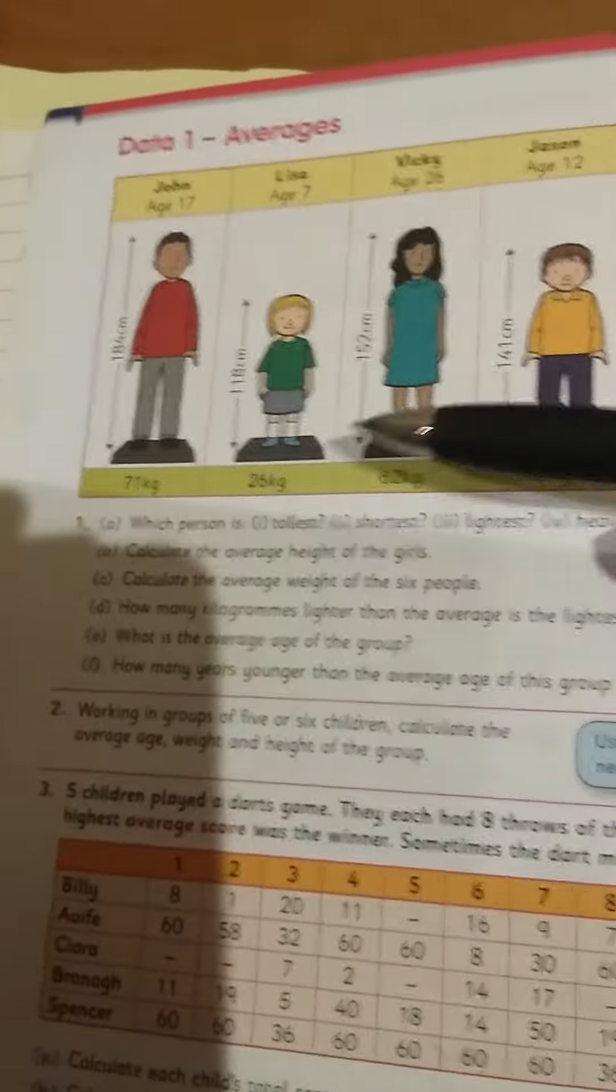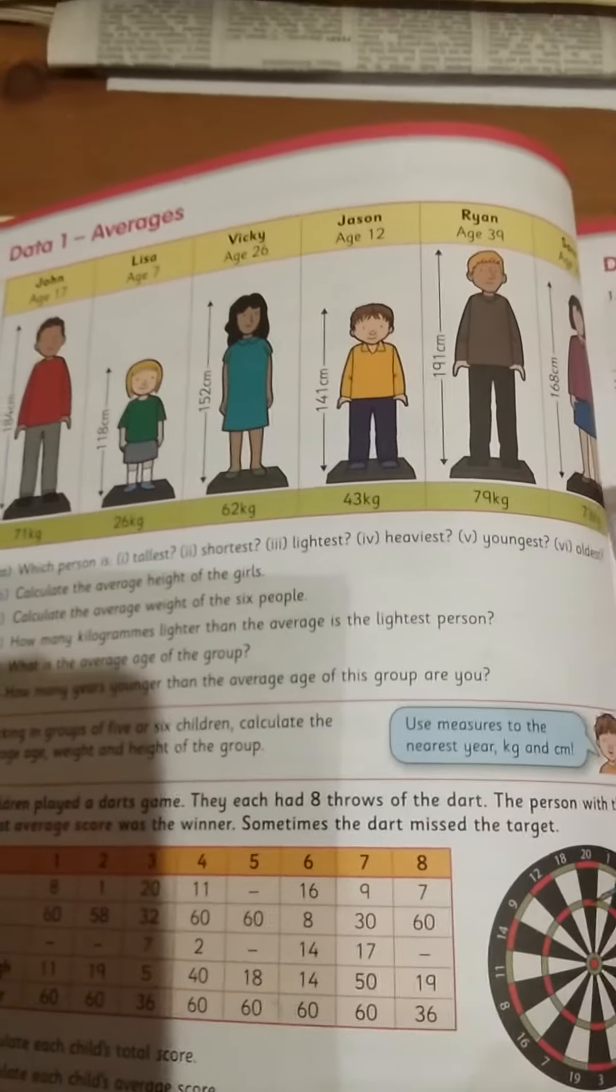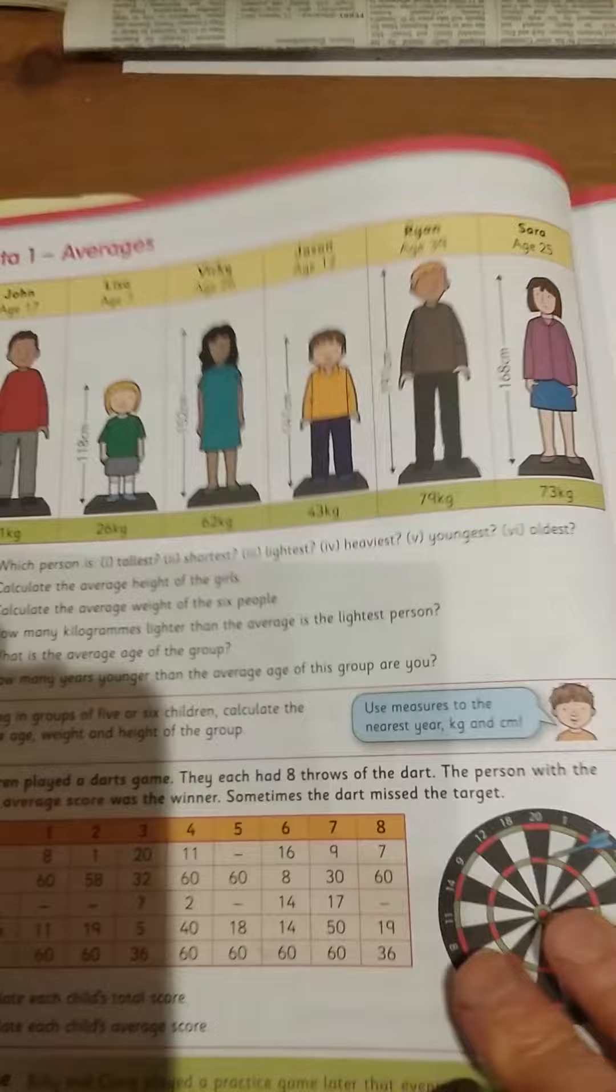Let's take a look at the question again. Which person is the tallest, the shortest, the lightest, the heaviest, and the youngest, and the oldest? Okay, so that should be okay.